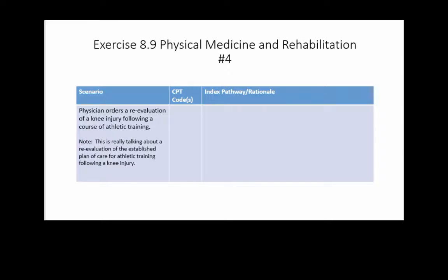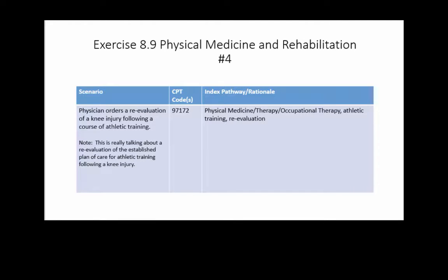A physician orders a reevaluation of a knee injury following a course of athletic training. What they're actually asking you to code is the reevaluation of a plan of care, because athletic training as a treatment falls under the plan of care. The physician is verifying that the plan of care given to the physical therapist or athletic trainer is working. The answer is 97172. Your main term is physical medicine/therapy/occupational therapy, subterm athletic training, then reevaluation. Be sure to select reevaluation rather than evaluation — those are different codes.